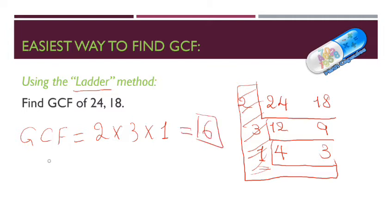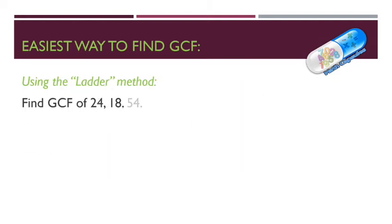2 times 3 times 1 is equal to 6. So the GCF — or HCF — of 24 and 18 is 6. This is called the ladder method. Now I will take another example with 3 numbers: 27, 18, and 54, using the same ladder method.